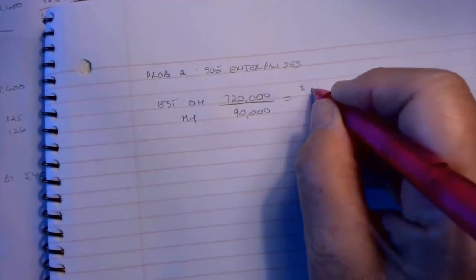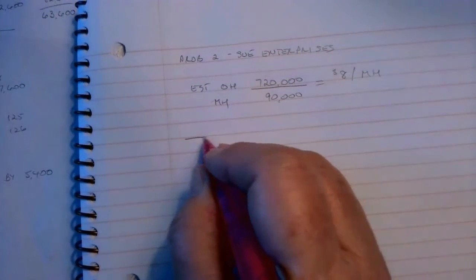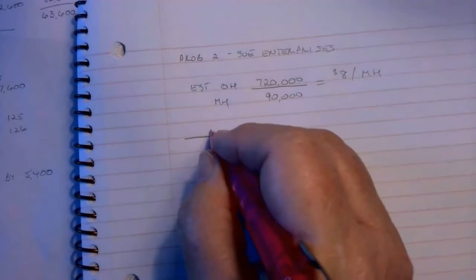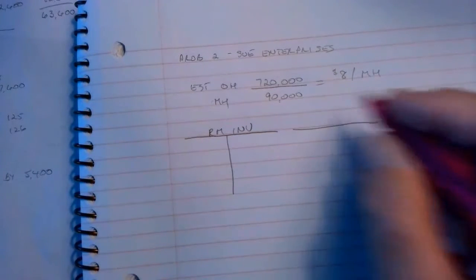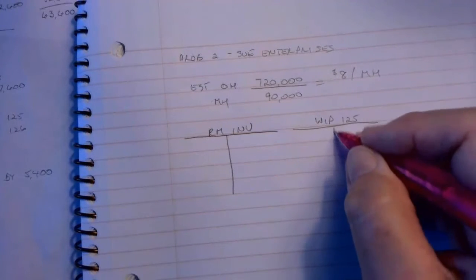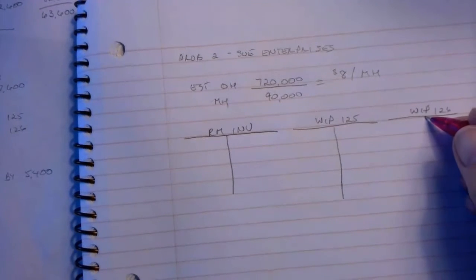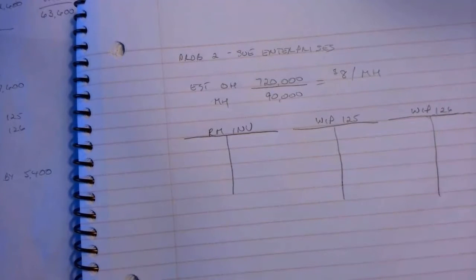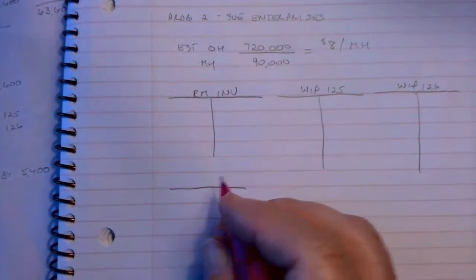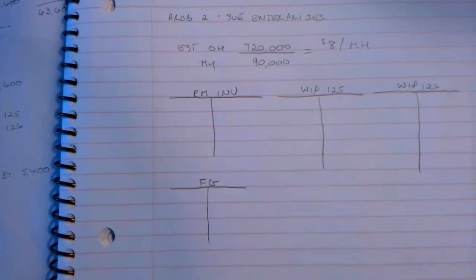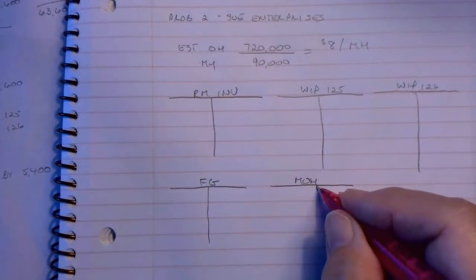So our overhead rate is $8 per machine hour. Okay, let's make some T-accounts. I'm going to start out with one for raw material inventory, and then we've got Job 125 and 126, so this would be WIP 125 and WIP 126. And then we'll also need finished goods inventory, and I'm also going to have a manufacturing overhead control account.